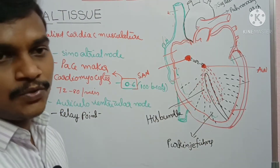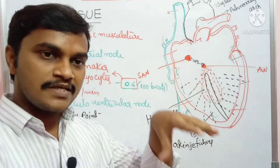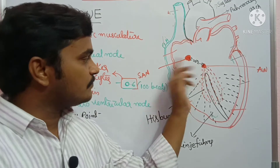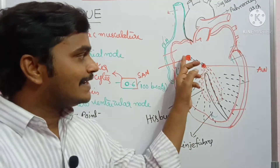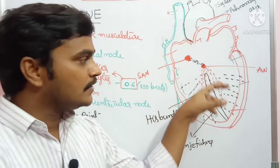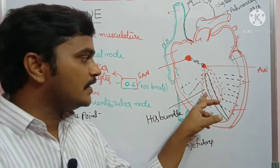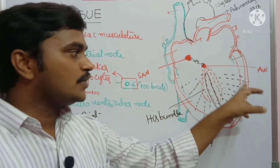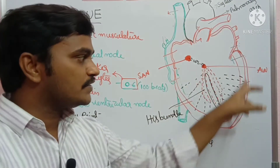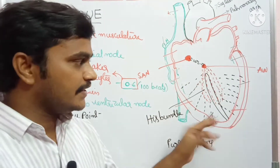So this is all about nodal tissue. First is the sinoatrial node, also called the pacemaker, which initiates action potential without any external stimuli. From there, the action potential transmits to the AVN — the atrioventricular node — which acts as a relay point. It transmits the impulse to the bundle of His. From the bundle of His, the action potential is transmitted through the Purkinje fibers, which transmit the impulse throughout the ventricular musculature.